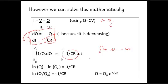So the log of Q over Q naught. So this is log rule. So the log of A minus the log of B is equal to the log of A over B. So I've got the log of Q over Q naught is minus T over CR. The way we get rid of the log sign is to raise both sides to the power of E. So I get Q over Q naught equals E to the minus T over CR. Or Q equals Q naught E to the minus T over CR.